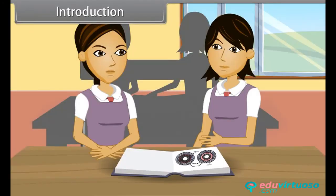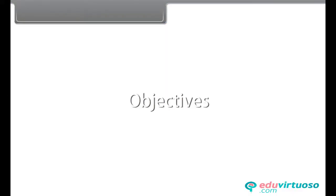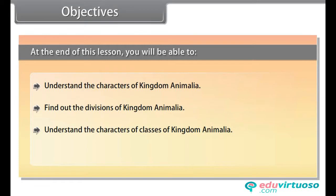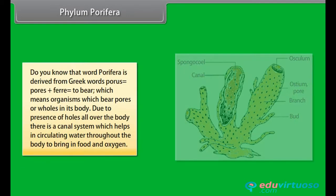We will now discuss some important characters and examples of various phyla of kingdom Animalia. The word Porifera is derived from Greek words porous, meaning pores, plus ferrae, meaning to bear — organisms which bear pores or holes in their body. Due to presence of holes all over the body, there is a canal system which helps in circulating water throughout the body to bring in food and oxygen.